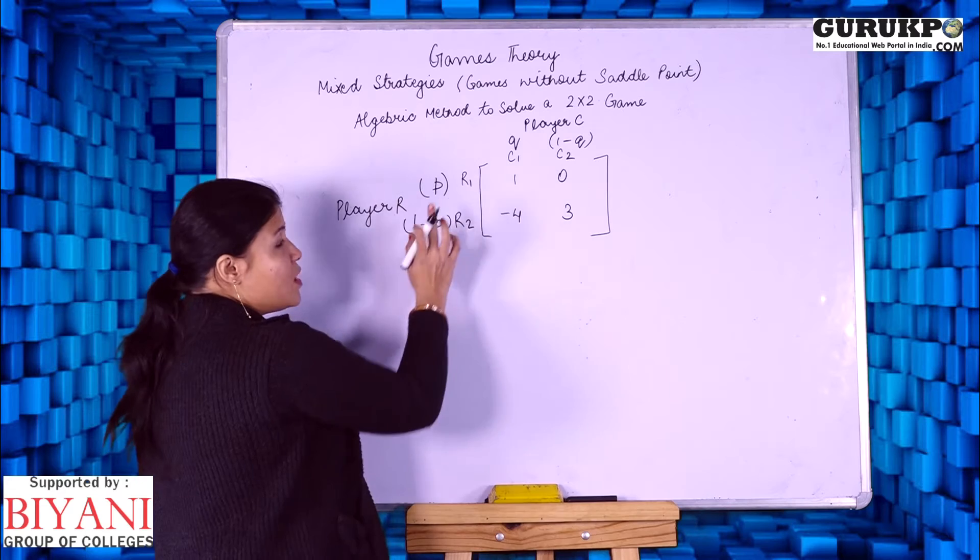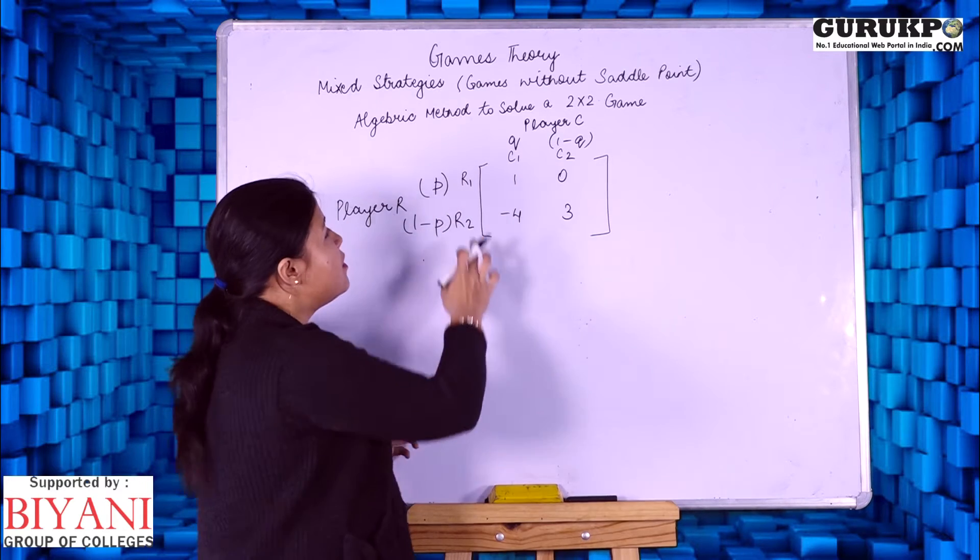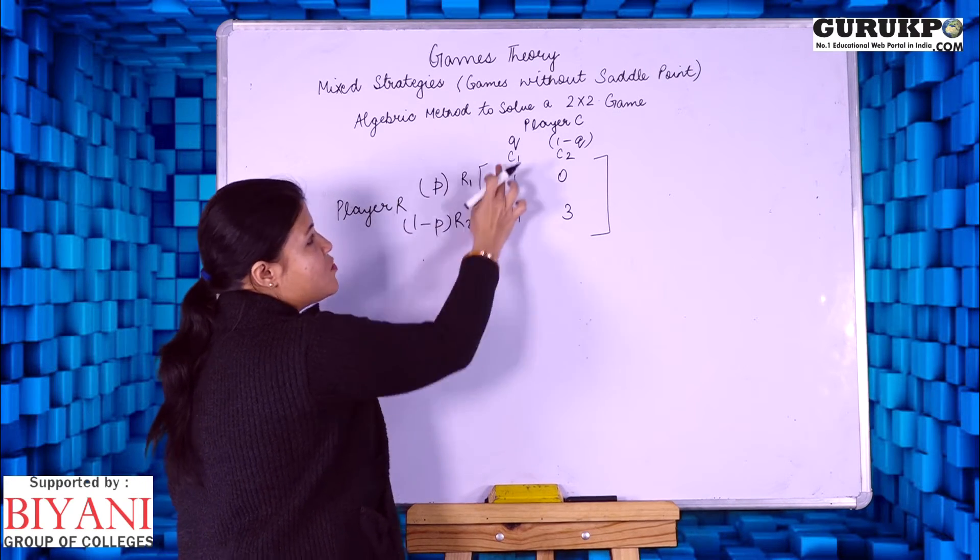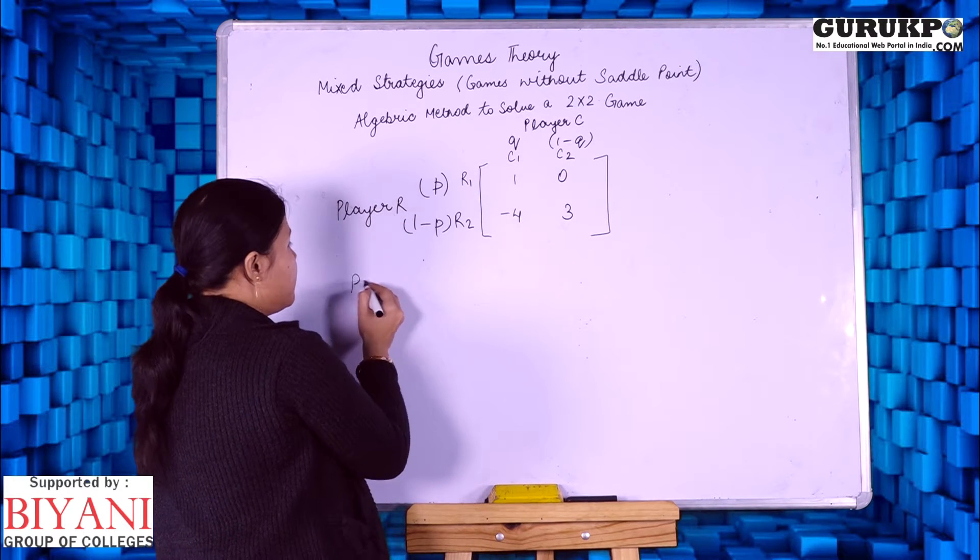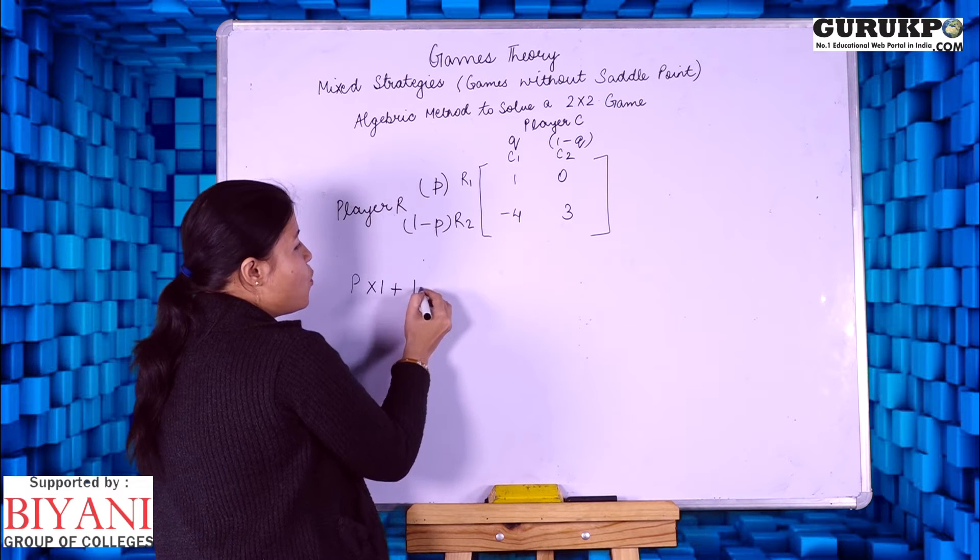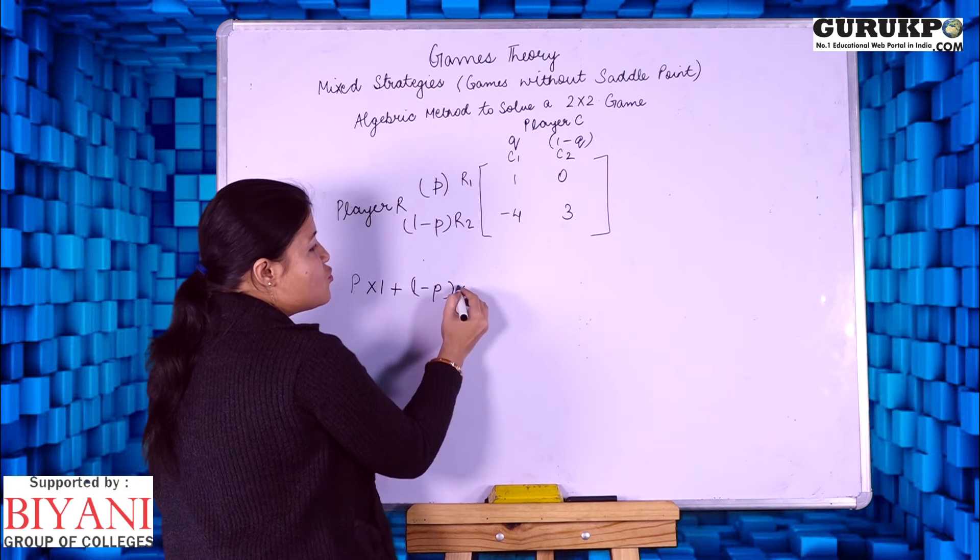To find out the strategy for row player, we have to multiply these two points with the strategies of R player. That is P into 1 plus 1 minus P into minus 4. This is one strategy for R.